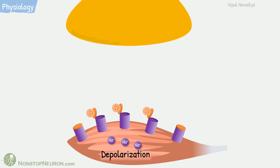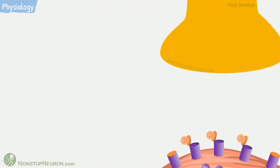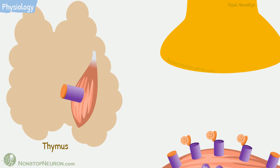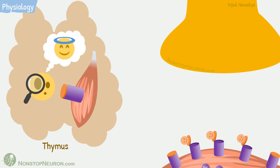So this is neuromuscular transmission. There is one more thing to know. This is the thymus, a gland involved in immunity. It has muscle-like cells, including acetylcholine receptors. Normally, these receptors are identified as the body's own proteins, so no immune reaction is triggered against them. This was all under physiological conditions.